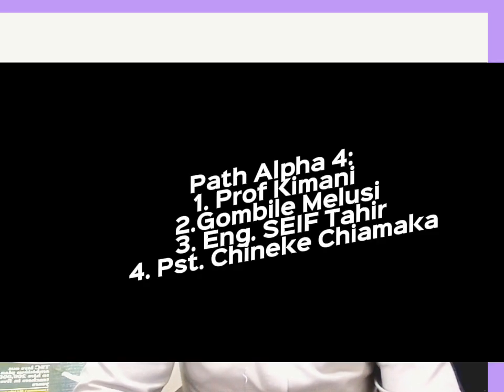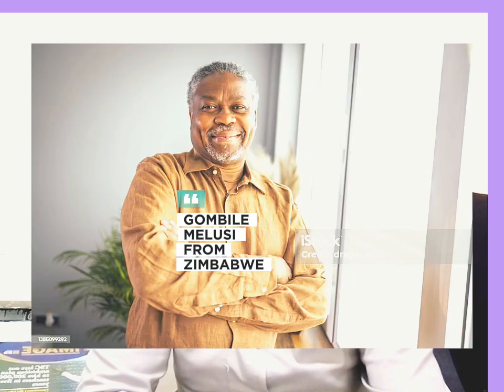It is after that meeting that we are taken back to the lives of the characters involved in the text. When the book begins, we are presented with four characters — I call them the four Alpha characters or observers. We have Professor Karanja Kimani from Kenya, Gombile Melusi from Zibagwe, Seif Tahir who is an engineer from Libya, and Pastor Cheneke Chiamaka from Nigeria. They are checking in at the Seamount Hotel in Banjul, having been assigned duties at the summit by Tad Longway, the coordinator of Path Alpha.